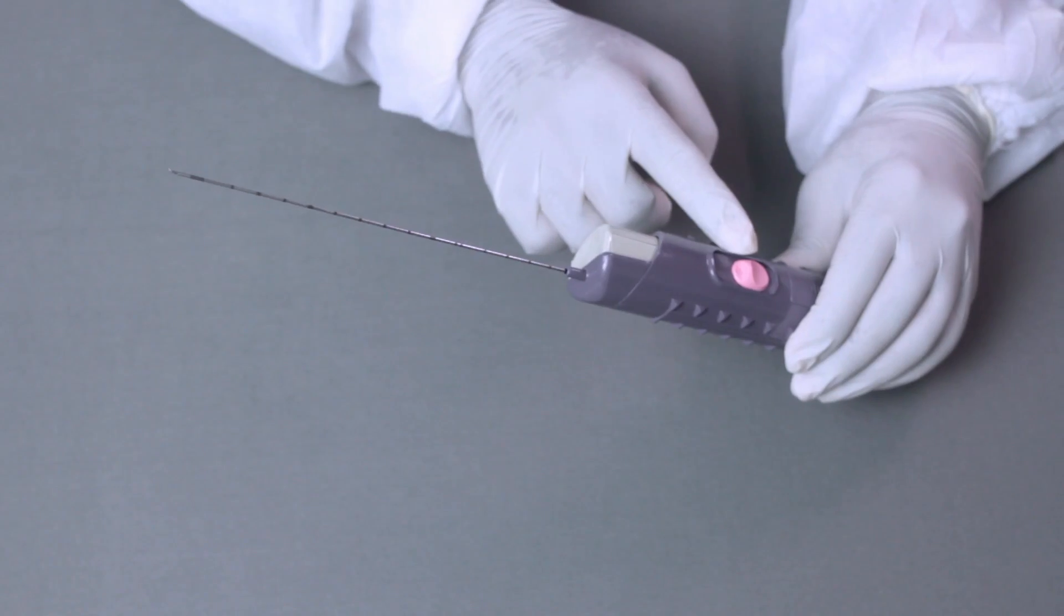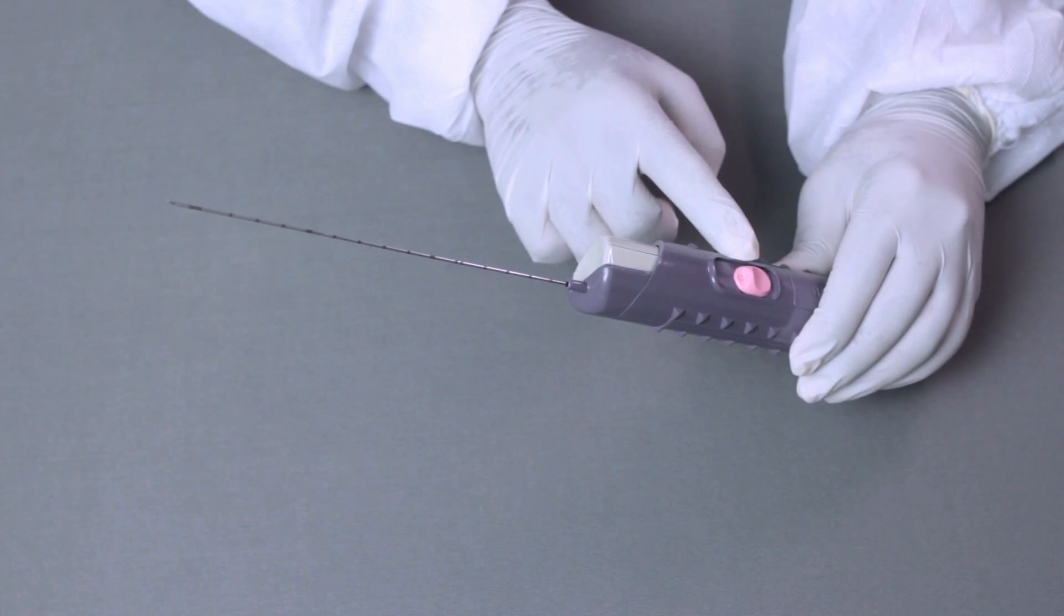The depth markings are provided over the length of the needle. The color of the button indicates the needle gauge.